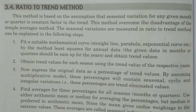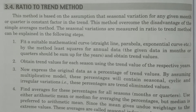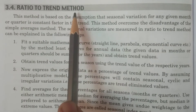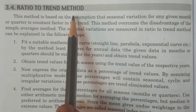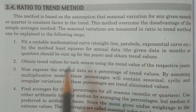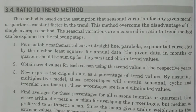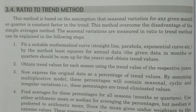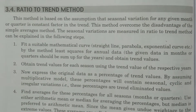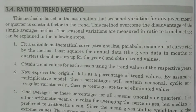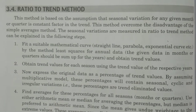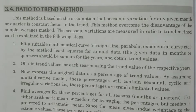Welcome to BSC Statistics. In this class, I explain the ratio-to-trend method. This is one of the methods to obtain seasonal variations, that is short-term fluctuations in the time series data.